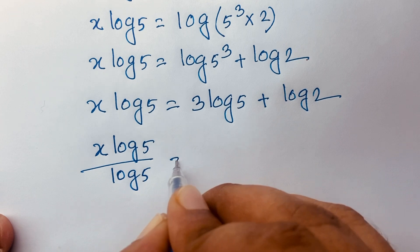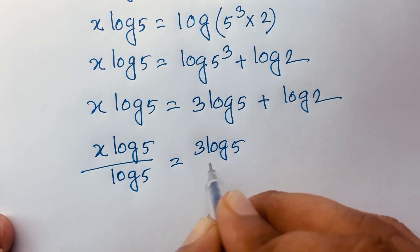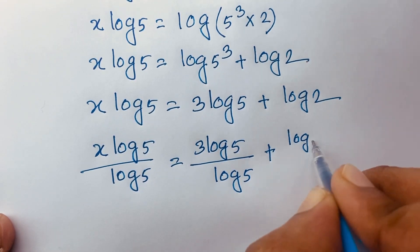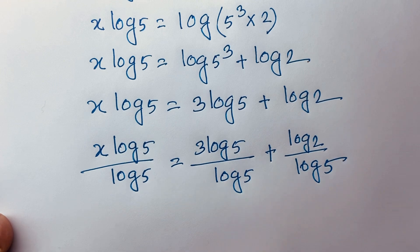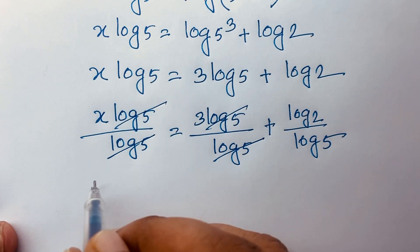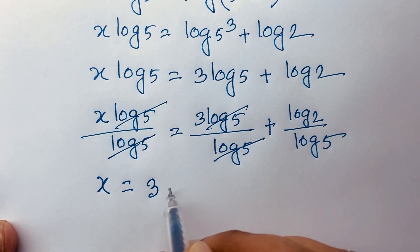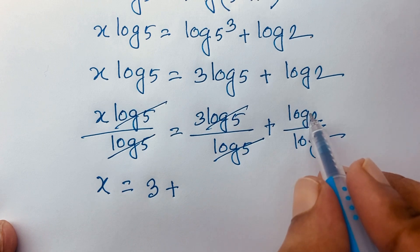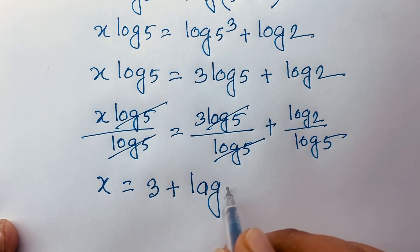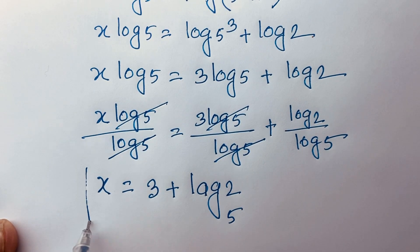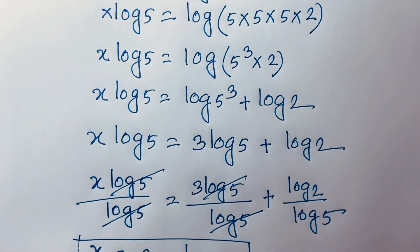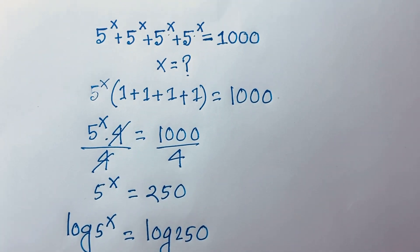Dividing through by log 5: on the left, log 5 cancels; on the right, 3 log 5 over log 5 gives 3, and log 2 over log 5 gives log base 5 of 2. So x equals 3 plus log base 5 of 2. This is our answer. Thank you all — if you enjoyed this video, please subscribe and like. Goodbye!